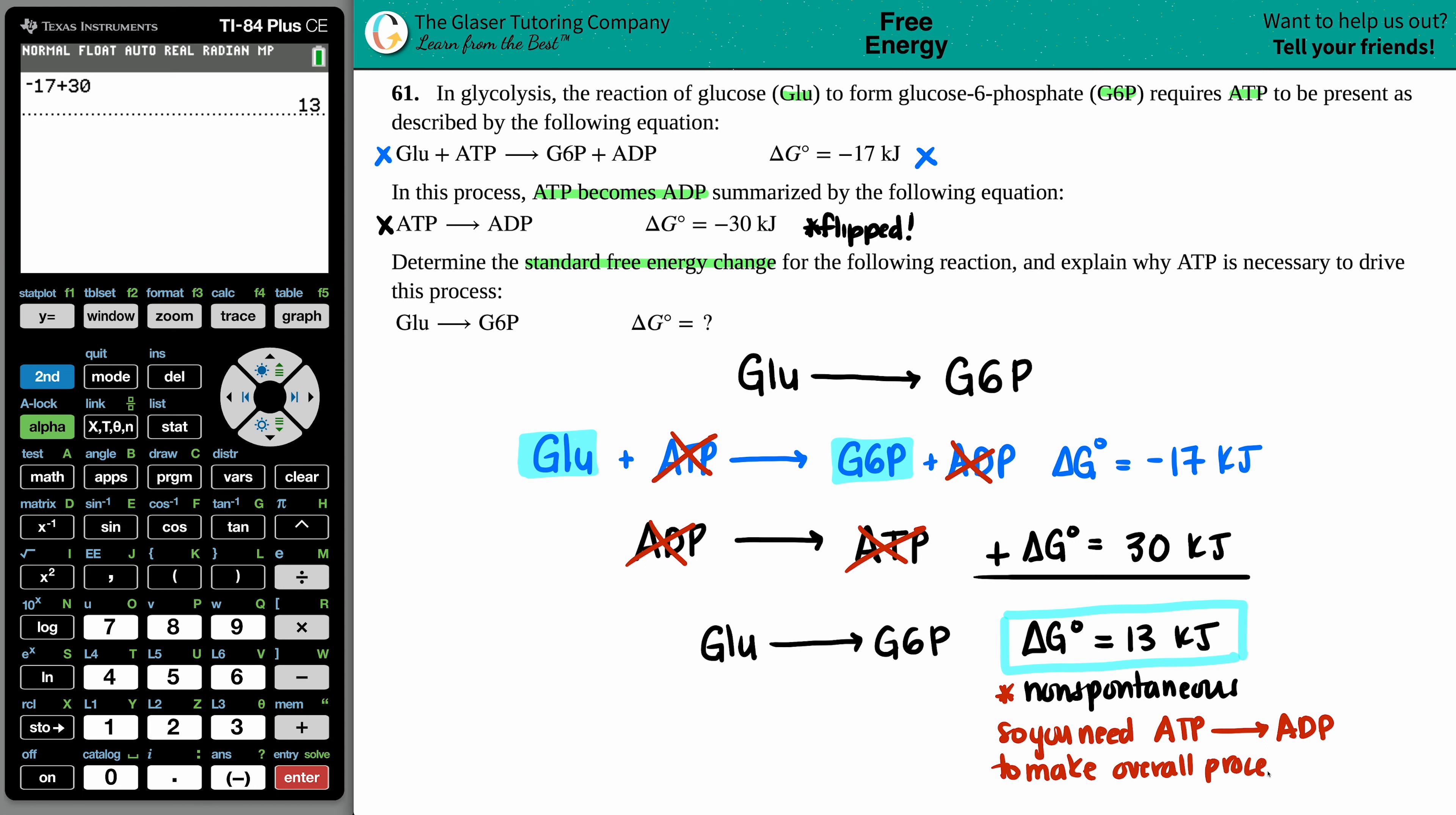And that is seen in the first balanced equation here. The overall general process is negative 17, and that's spontaneous. And that's it. Really hope this helped.